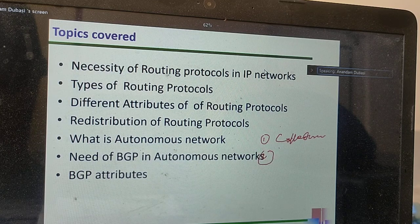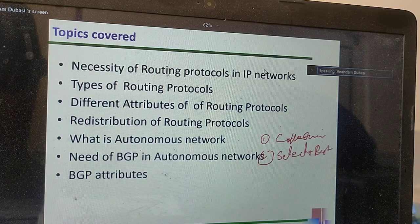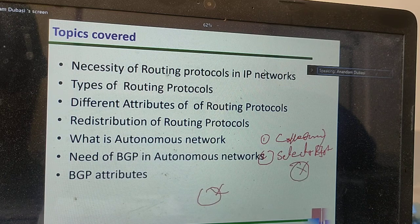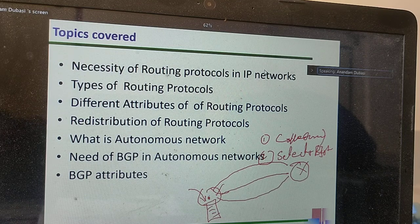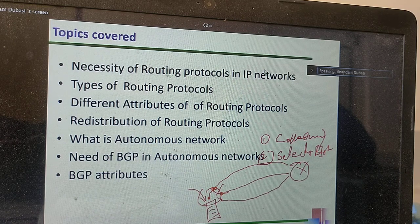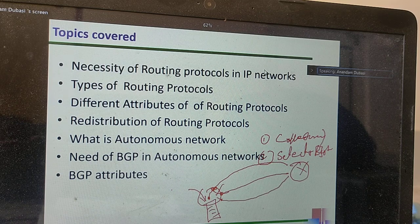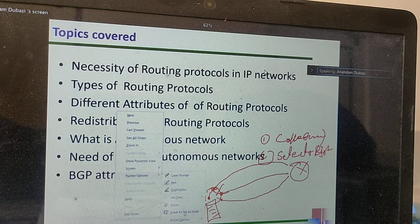The second important function of any routing protocol is selecting the best path. These two are the important functionalities of any routing protocol. Suppose this is my router and this is another router — I connected these two routers using multiple links. One function is learning the routes and maintaining that information in the routing table. The other function is that the routing protocol selects the best path among the available paths. Different protocols use different algorithms, and based on those algorithms the protocols are defined.